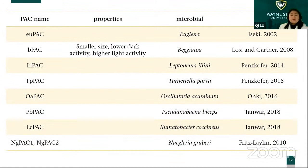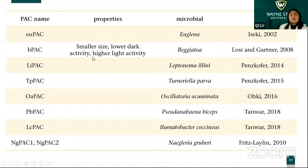This is a very interesting application. So far many PACs have been discovered from many microbial species. One very attractive one is the BPAC, from Beggiatoa. Comparing to the original earliest find EuPAC, its protein size is smaller, has lower dark activity, and higher light activity.